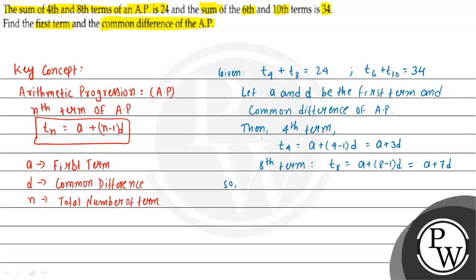Adding T4 and T8: (A + 3D) + (A + 7D) = 24, so 2A + 10D = 24. Dividing both sides by 2, we get A + 5D = 12. We will consider this as equation 1.